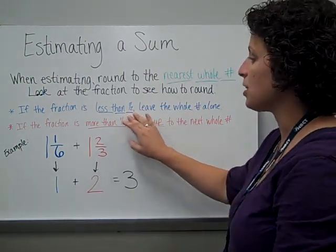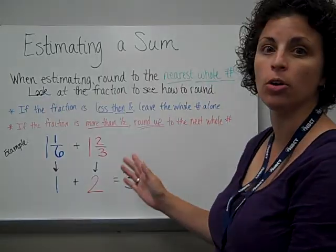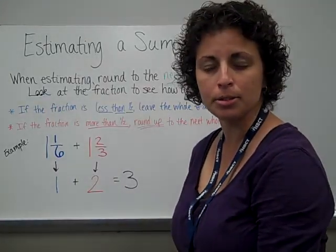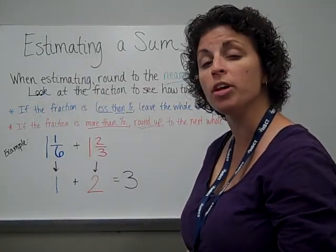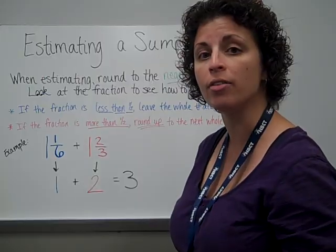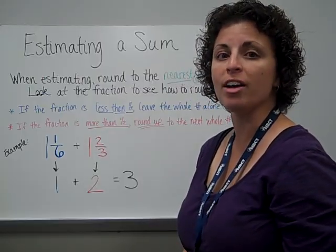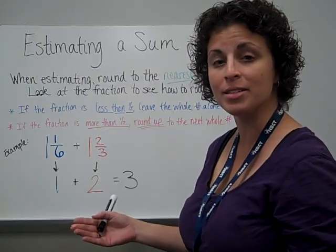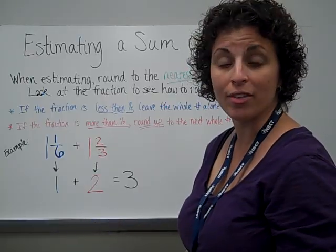When the fraction is less than 1 half, we're going to leave the whole number alone. This is like let it rest. When we were doing whole numbers, the rule was 5 or above, give it a shove. If you remember, we chose 5 because our number is a base 10 number system, and 5 is half of that.